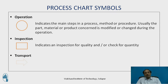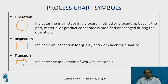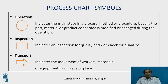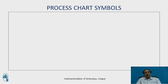The third symbol is transportation, indicated by an arrow, which indicates the movement of the worker or the material from one place to another place. It can also indicate the movement of equipment from place to place.